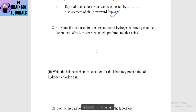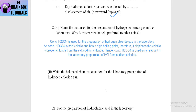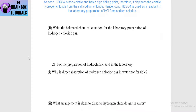Next: name the acid used for the preparation of hydrogen chloride gas in the laboratory. Why is this particular acid preferred? Concentrated H2SO4 is used for the preparation. As concentrated H2SO4 is non-volatile and has a high boiling point, it displaces the volatile hydrogen chloride gas from the salt, sodium chloride. The reaction: NaCl + H2SO4 (concentrated), at less than 200°C → NaHSO4 + HCl gas.